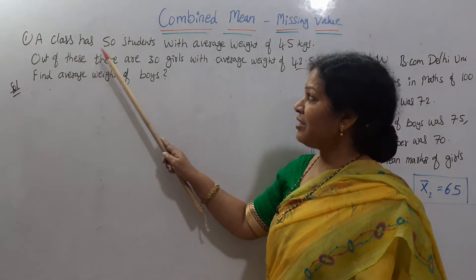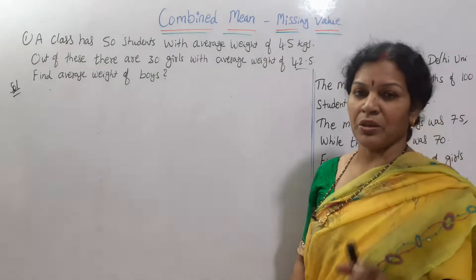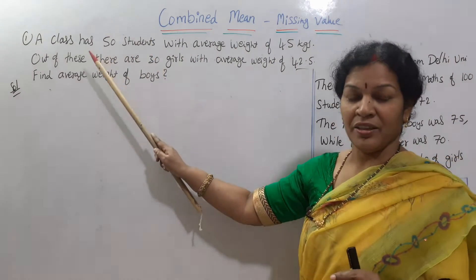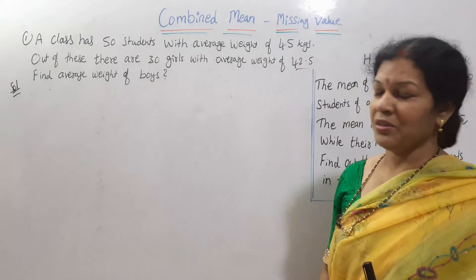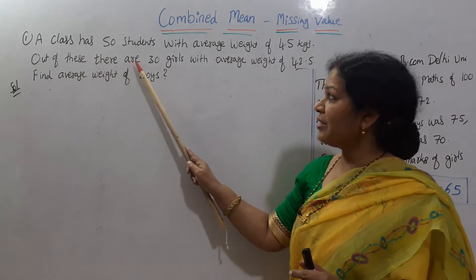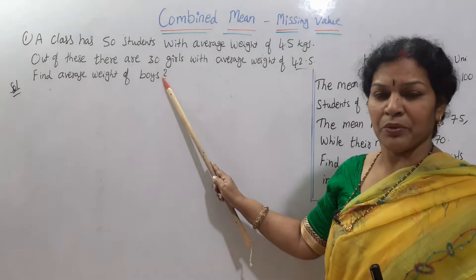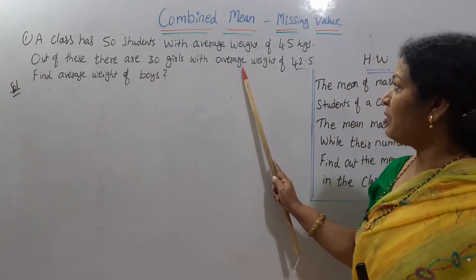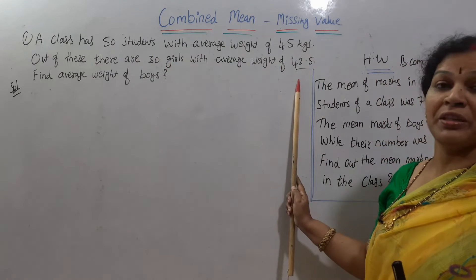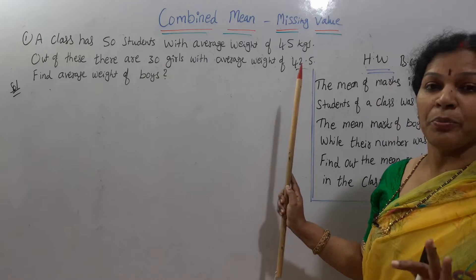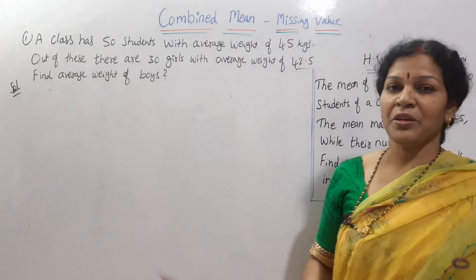A class has 100 students with an average weight of 45 kgs. Out of these, there are 30 girls with an average weight of 42.5 kgs. Find the average weight of the boys.